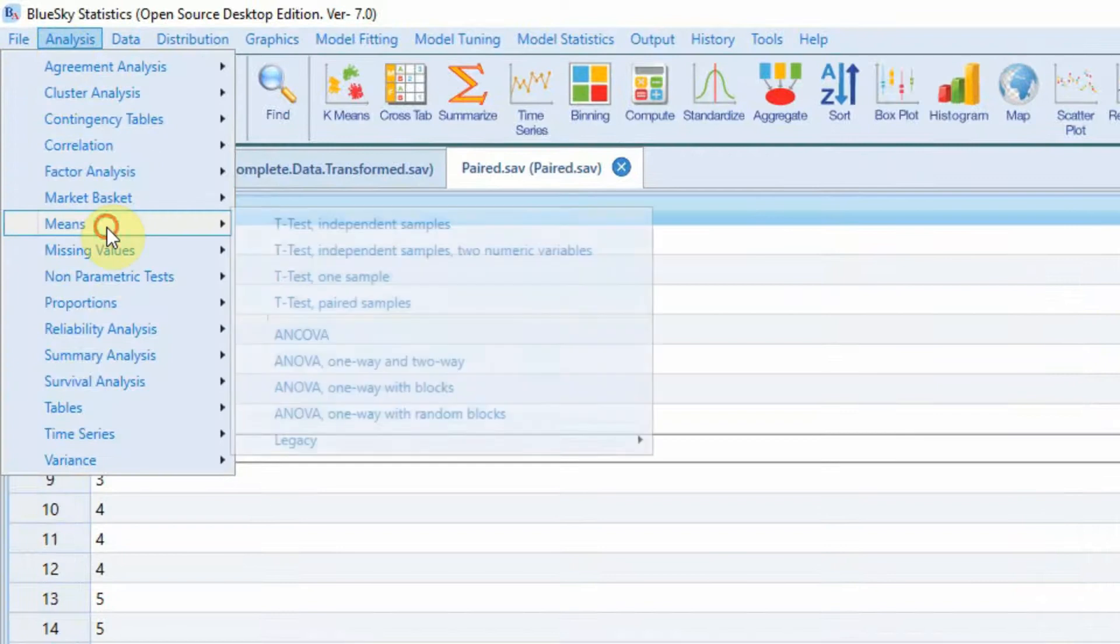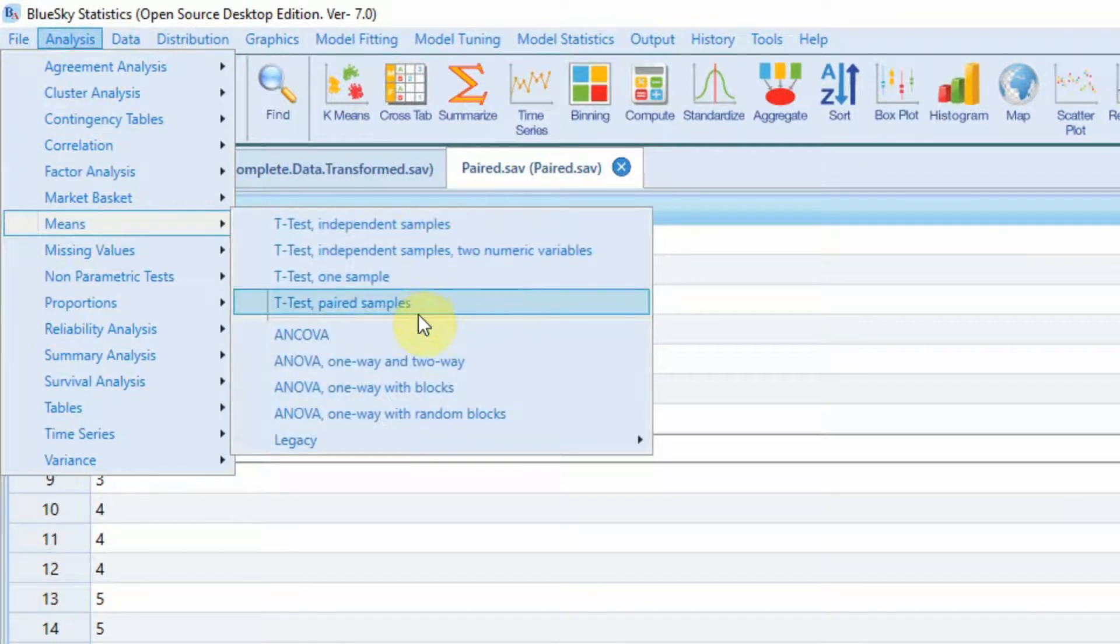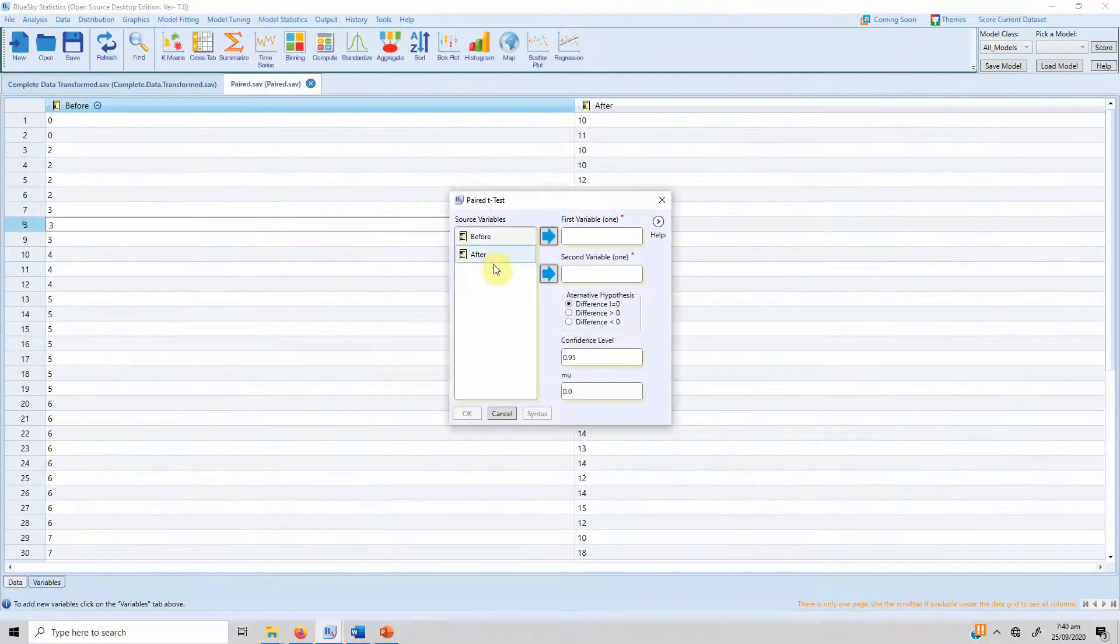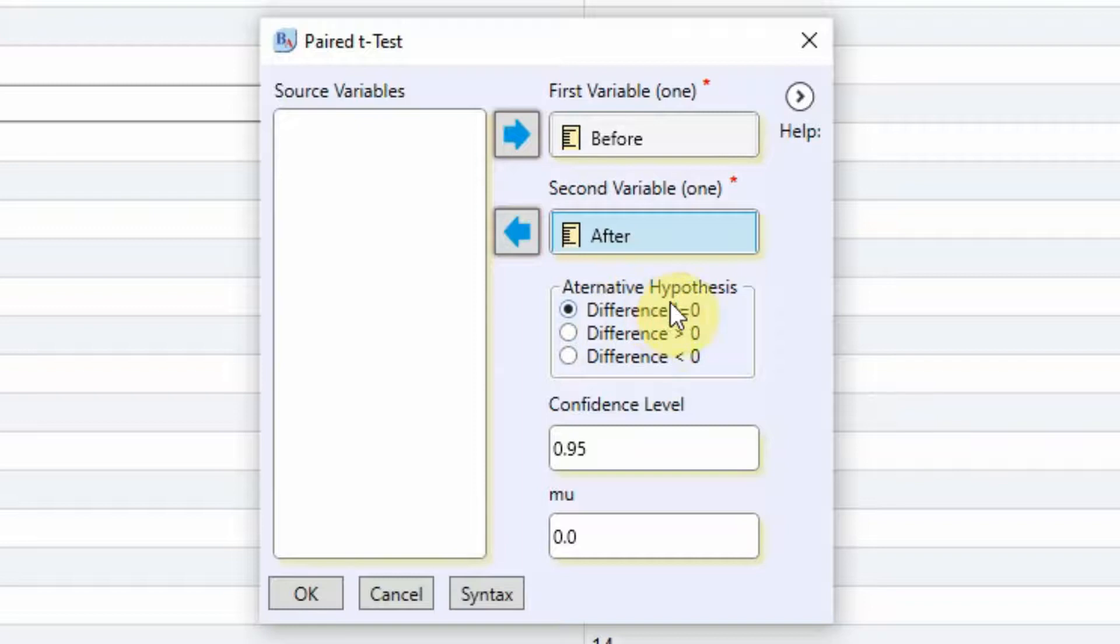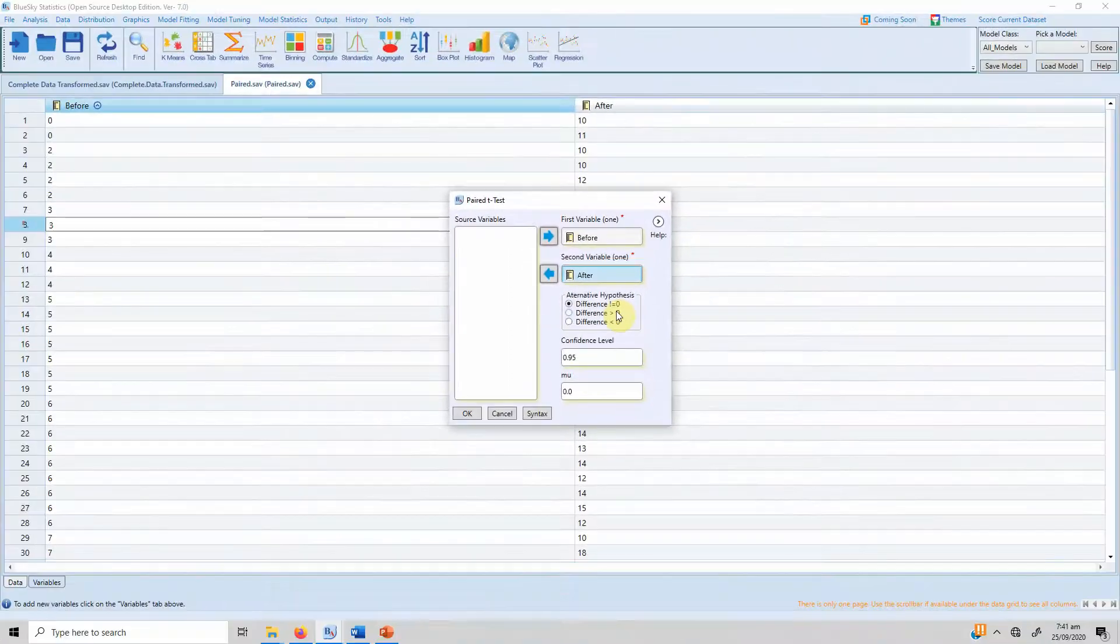How do I do this? Go to Analysis, Means, T-test, Paired Samples. The first variable is your before variable, second is your after variable. In this case the difference, so your alternate hypothesis is that there is a significant difference. The difference is not equal to zero, so there has been a change in the difference scores.